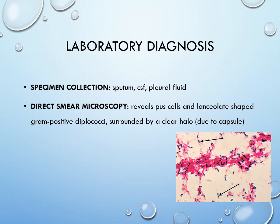How do we diagnose this case? Depending upon the disease, different samples can be taken — sputum, CSF, or pleural fluid — but for pneumonia, sputum is mainly used. On direct smear microscopy you will see PMNs and lanceolate-shaped gram-positive diplococci present in pairs, surrounded by a clear halo due to the capsule.